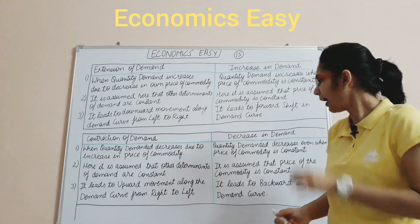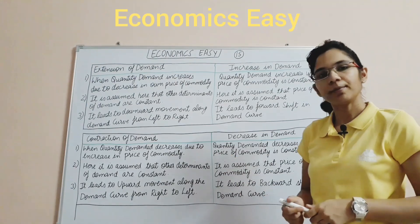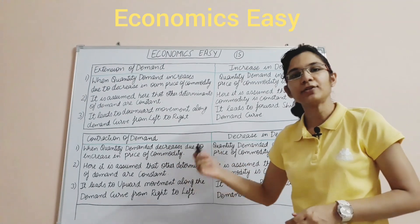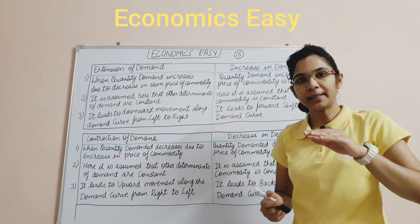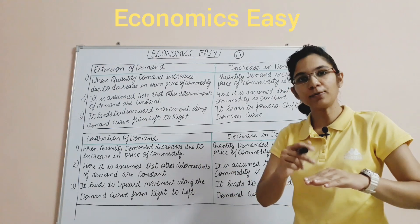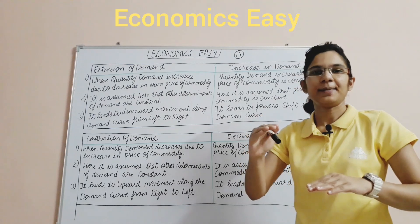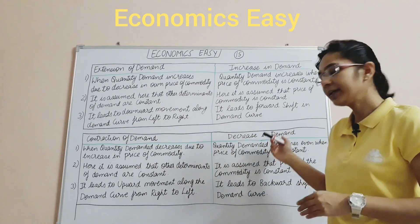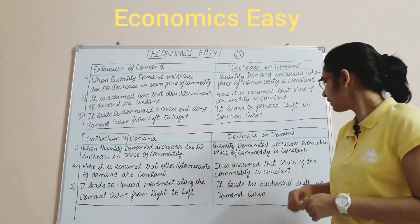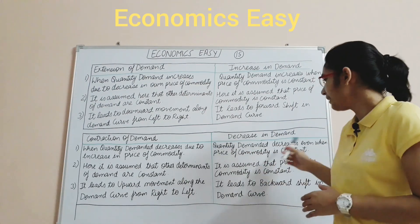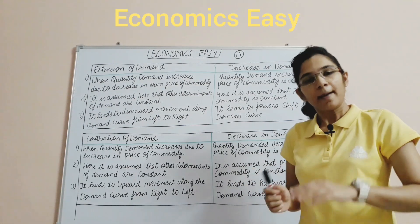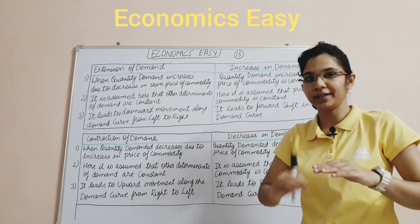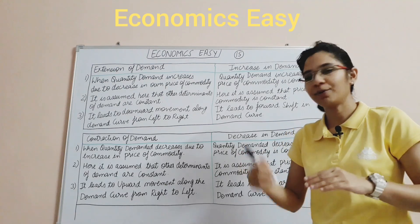Now comes contraction of demand and decrease in demand. Contraction of demand occurs when quantity demanded decreases due to an increase in price of the commodity — as price increases, quantity demanded decreases. Decrease in demand is when quantity demanded decreases even when price of the commodity is constant — for example, price is still 100 rupees per unit but the quantity demanded by the consumer decreases.